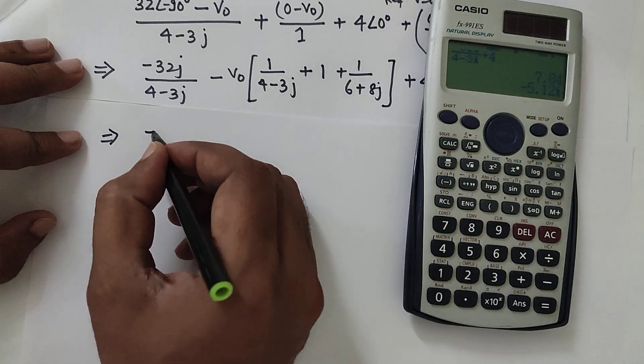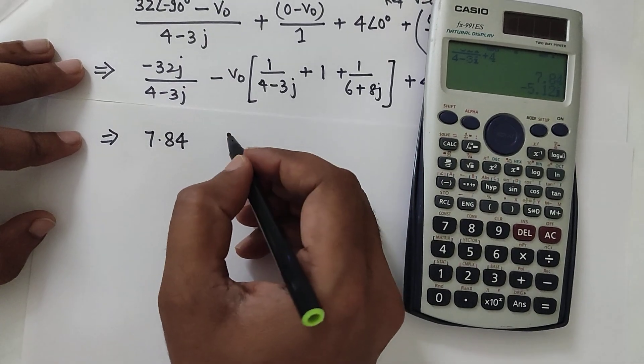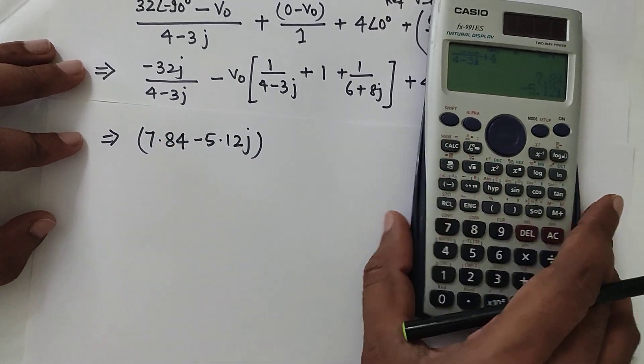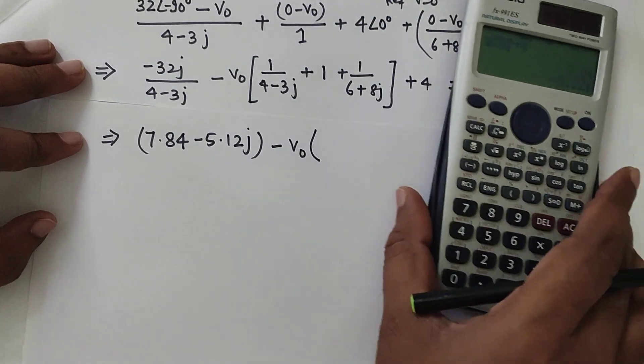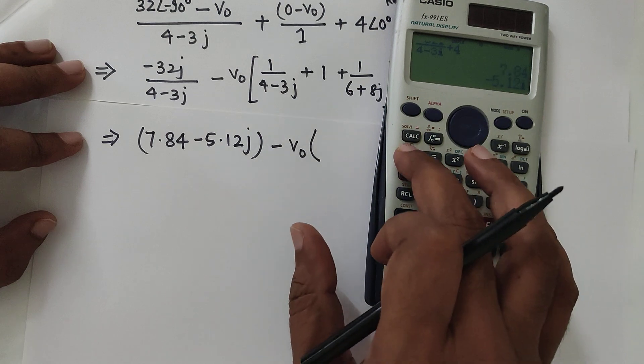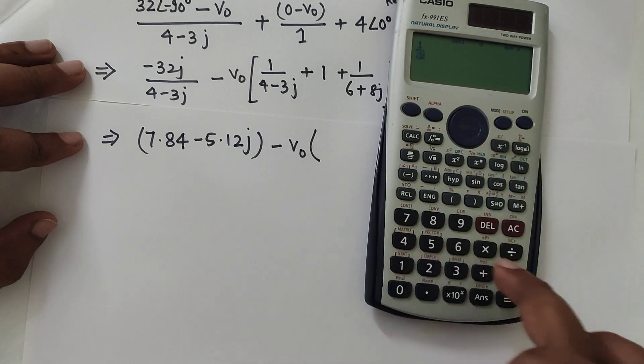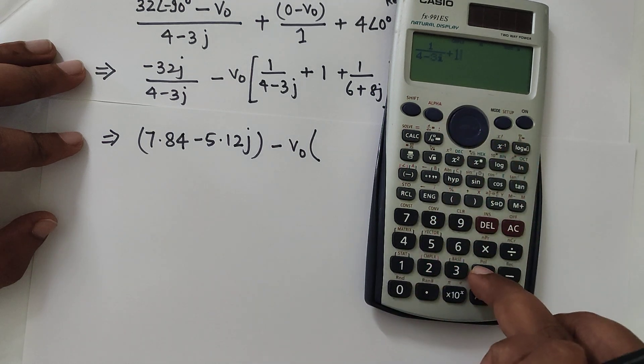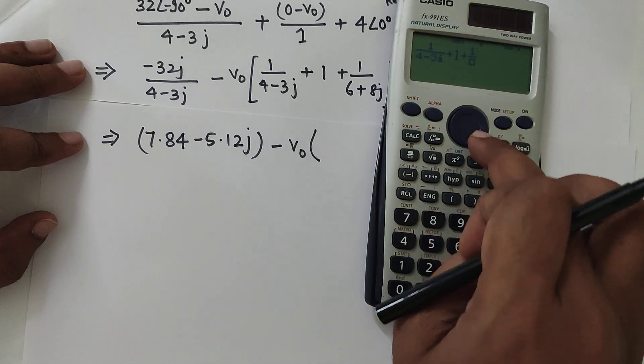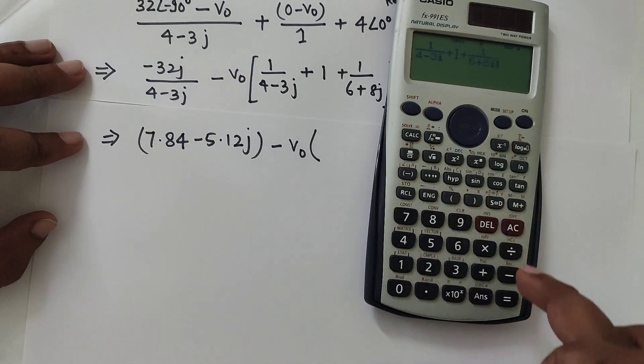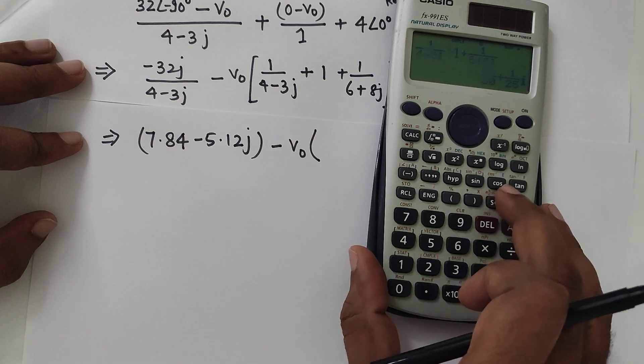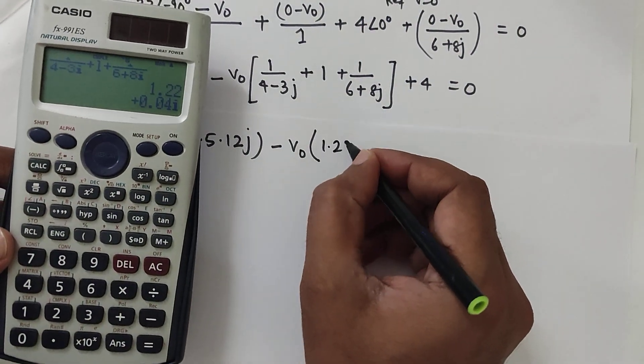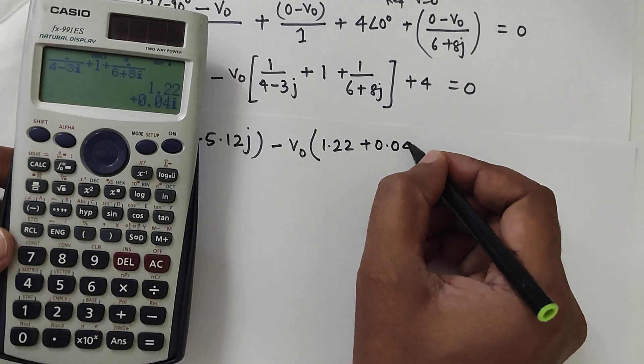So you can write 7.84 minus 5.12j minus V0 into... Now we will calculate this. So it is 1 divided by 4 minus 3j plus 1 plus 1 by 6 plus 8j equal to 1.22 plus 0.04j.